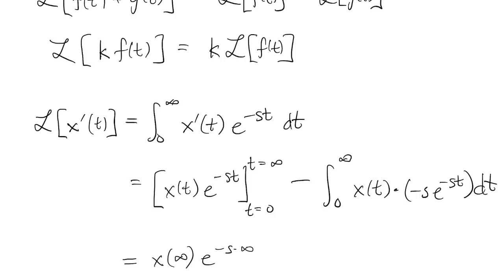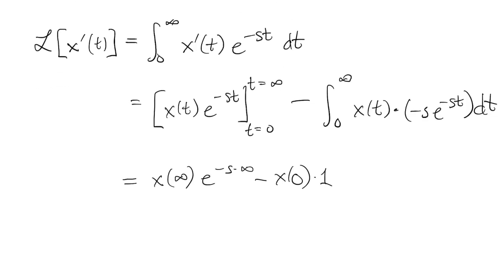So if s is positive, then we have e to the negative infinity, and that would be zero. So that term is always going to go away for us. Then we have x at zero, and we have the integral.